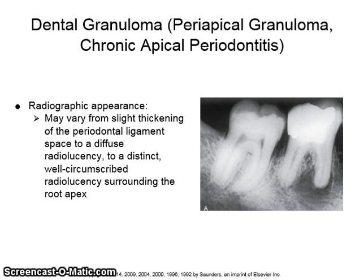The radiographic appearance of a dental granuloma may vary from slight thickening of the periodontal ligament space to a diffuse radiolucency, to a distinct, well-circumscribed radiolucency surrounding the root apex.